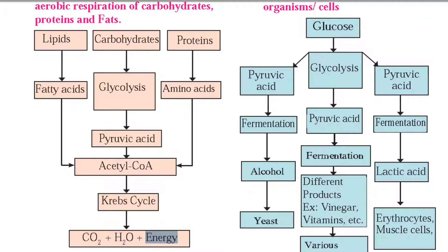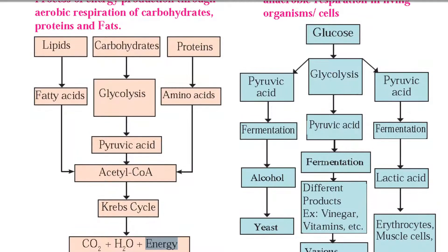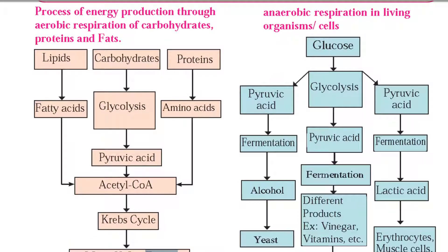Next is anaerobic respiration. In the case of anaerobic respiration — when we are doing heavy exercise, playing, or doing really hard work — most of the energy is consumed and oxygen is not supplied to our body as required. So our body generates energy in the absence of oxygen, called anaerobic respiration. Glucose undergoes glycolysis and produces pyruvic acid. This step — glucose to glycolysis to pyruvic acid — is common to both aerobic and anaerobic respiration.